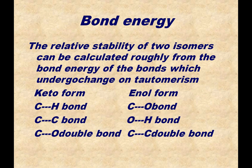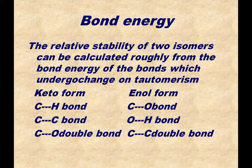The bonds in the keto form and the bonds in the enol form which undergo change on conversion from one form to another. In the keto form, the bonds involved in conversion are the carbon-hydrogen bond which is broken, the carbon-carbon double bond which is formed, and the carbon-oxygen double bond which is broken and converted into a carbon-oxygen single bond. In the enol form, the carbon-oxygen single bond converts to a carbon-oxygen double bond, the oxygen-hydrogen bond is broken, and the carbon-carbon double bond converts to a single bond.